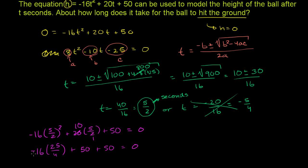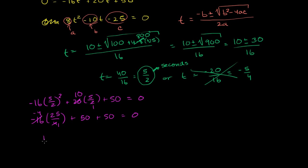Negative 16 divided by 4 is negative 4. 4 divided by 4 is 1. So you have negative 4 times 25, which is negative 100, plus 50, plus 50 again, is equal to 0. And so we have negative 100 plus another 100. Well, that's definitely going to be equal to 0.